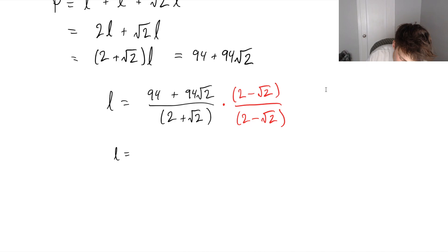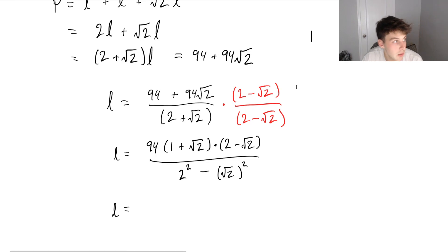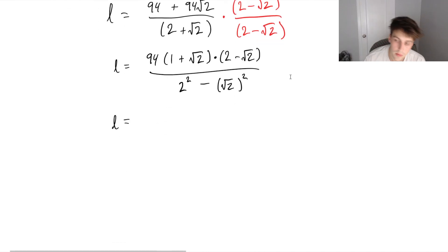So our length is going to be equal to, let's actually also factor out a 94 from our numerator. So we get 94 times one plus root two and this is times two minus root two. In the denominator, you can either expand this in foil, or you can notice that this is a difference of squares, where we have two squared or four minus square root of two squared.